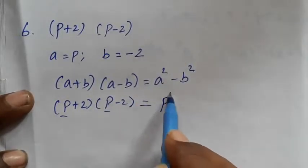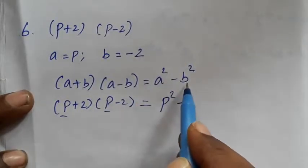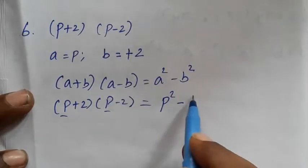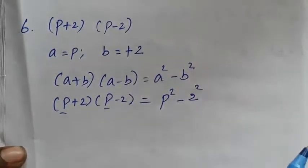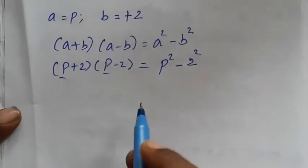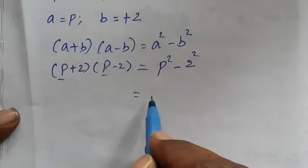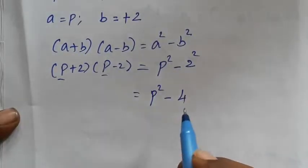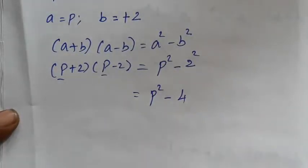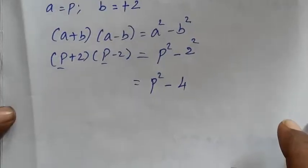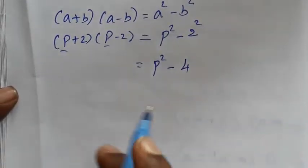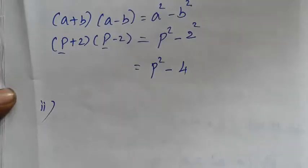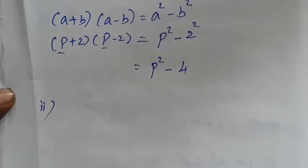What we are doing: P squared minus B. If we use P and P squared, then we use P squared. If we use the first sum, then we use the second sum.